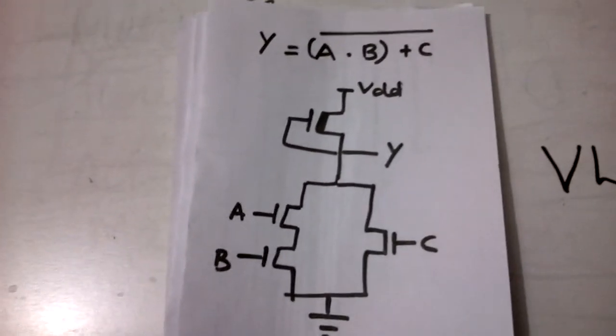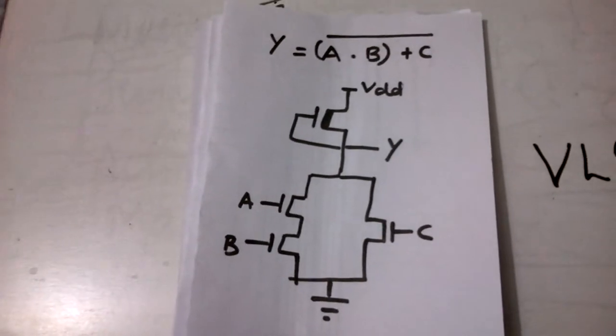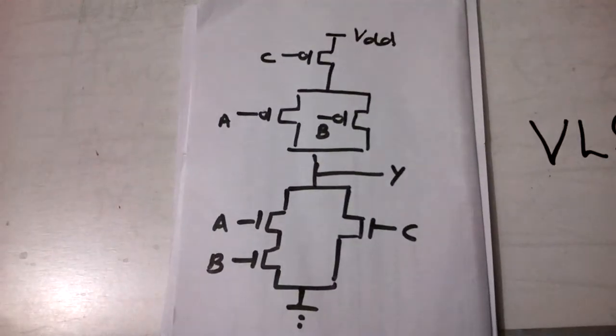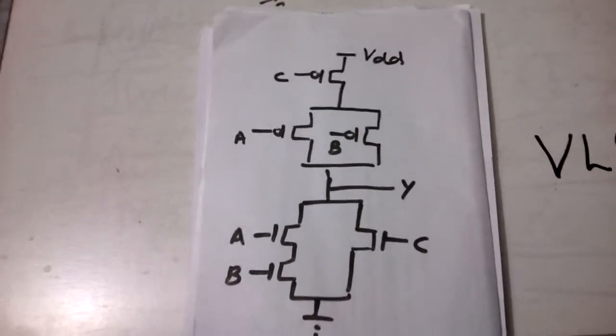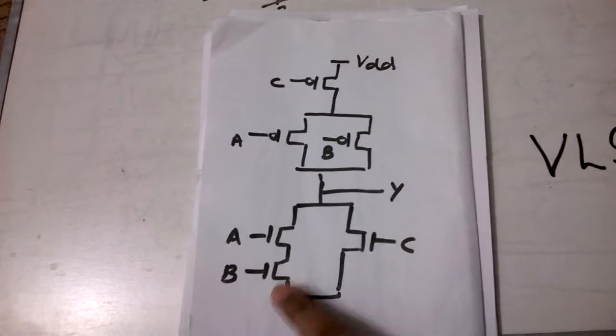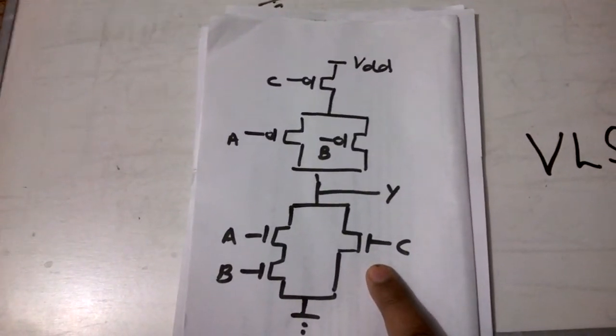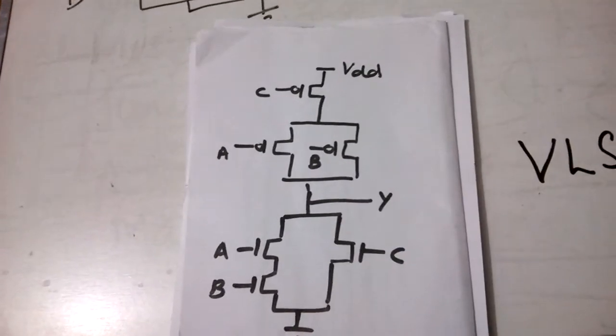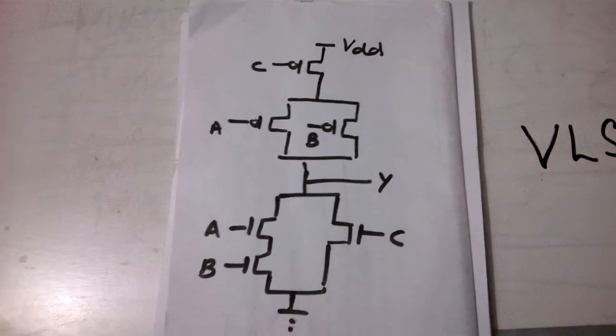Now if I want to design the same expression using a CMOS, this is the CMOS structure for the same expression. The N logic block remains the same, a and b in series and c in parallel, but the p logic block which is drawn above this output y, it is just a complementary of the below lower structure.